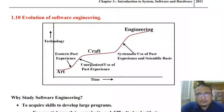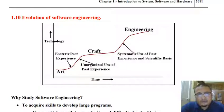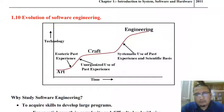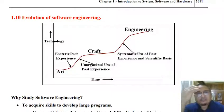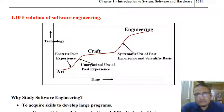So craft has a shape but does not have a definite size. Likewise, an engineering product has both shape as well as size. Art is created using esoteric past experience — your own perspective that you don't want to share — which is rather unorganized and unprocedural, whereas an engineering product is created using scientific principles and a systematic approach.